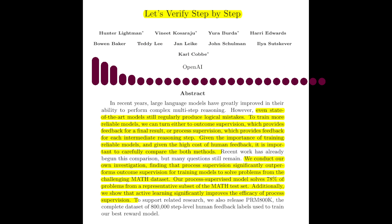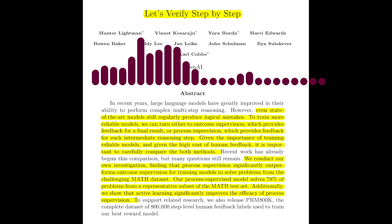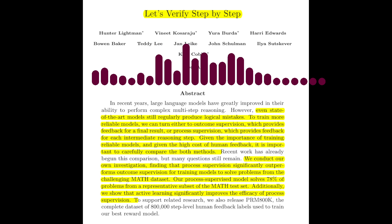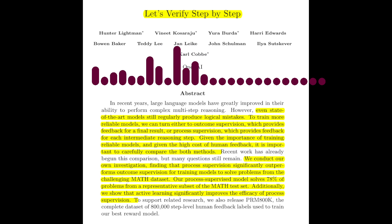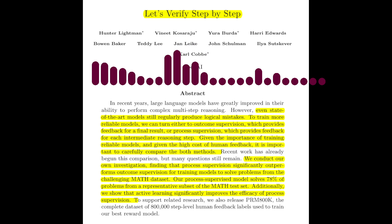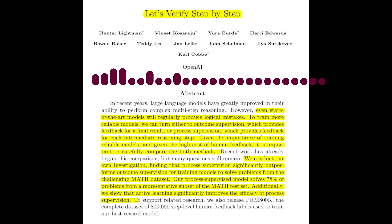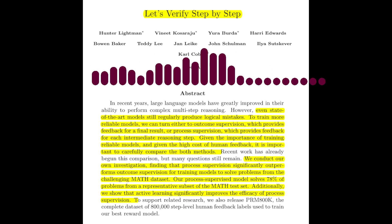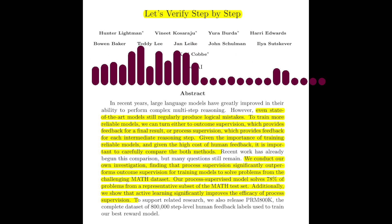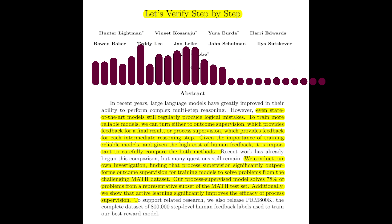The paper concludes by highlighting the potential of process supervision for future research. Future research could explore the generalization of process supervision to other domains beyond mathematical reasoning. Investigating different active learning strategies and exploring process supervision in conjunction with reinforcement learning are also promising avenues. The paper also releases a dataset of human feedback labels, PRM-800K, to facilitate further research.